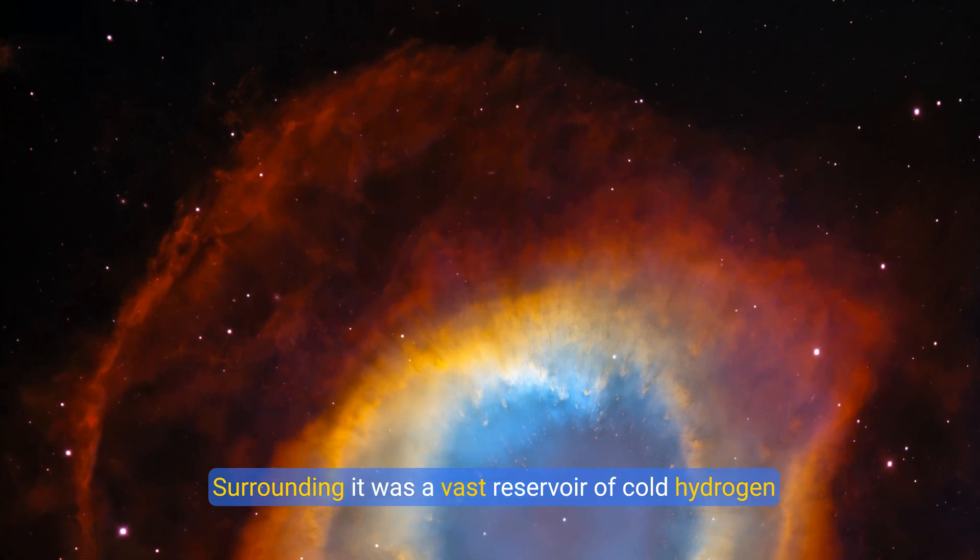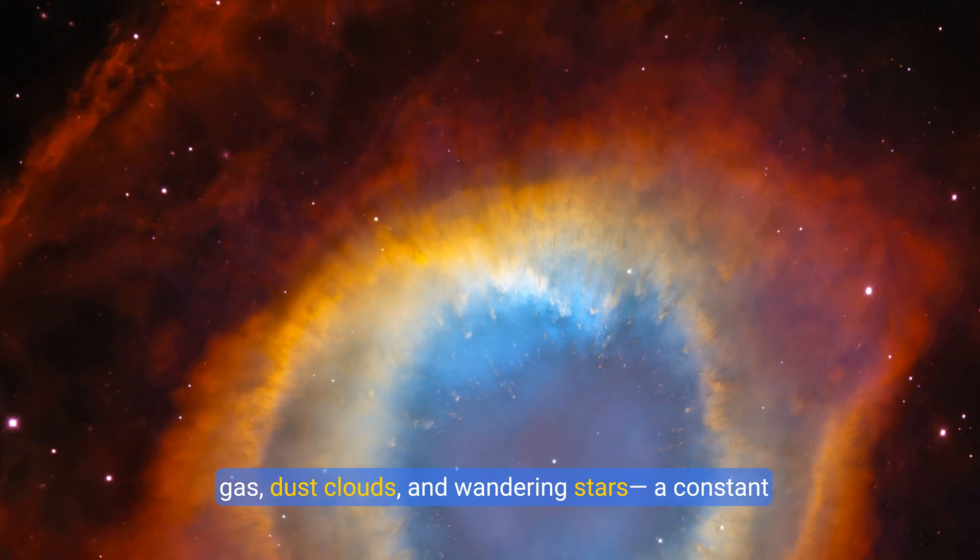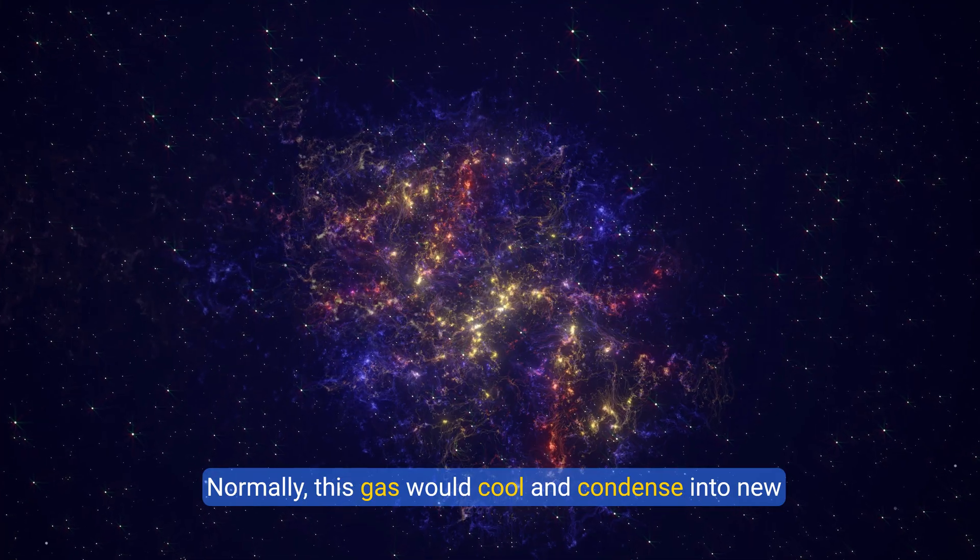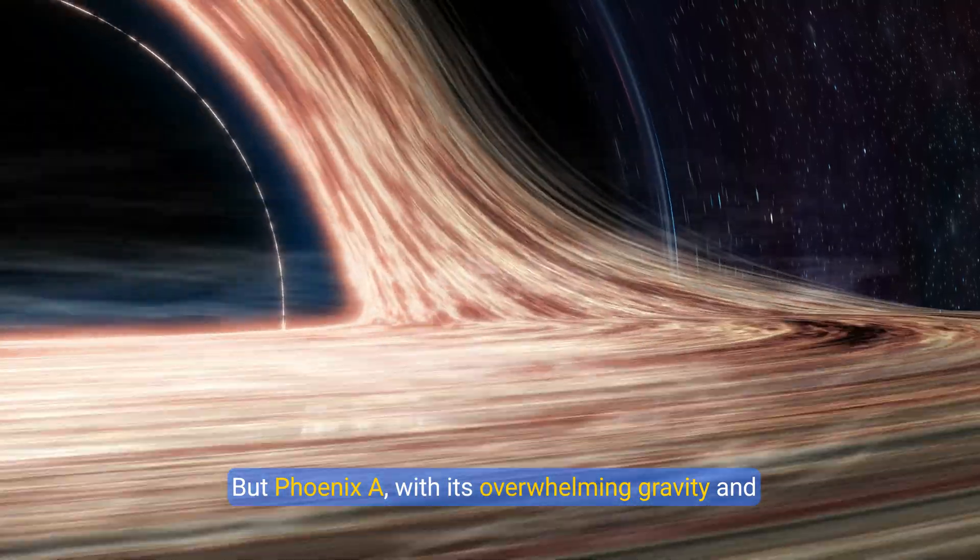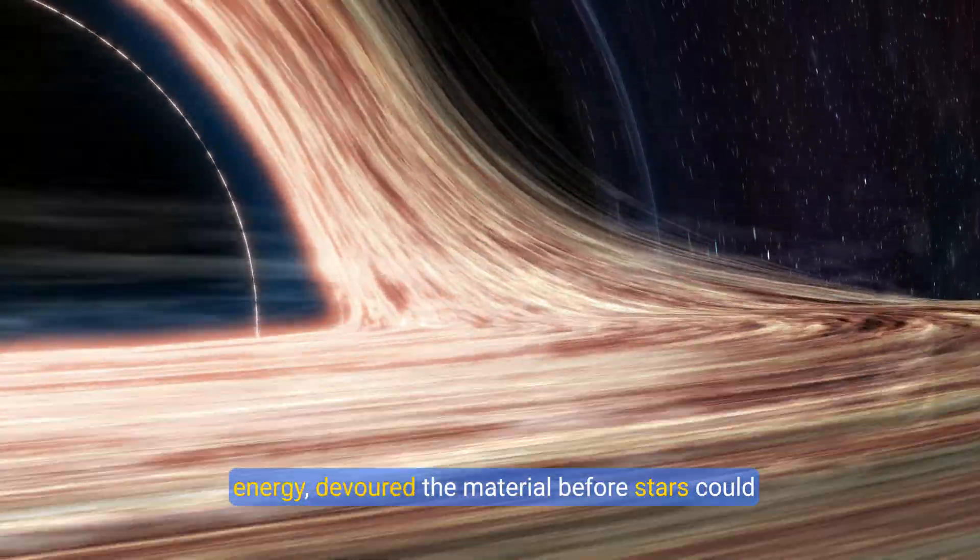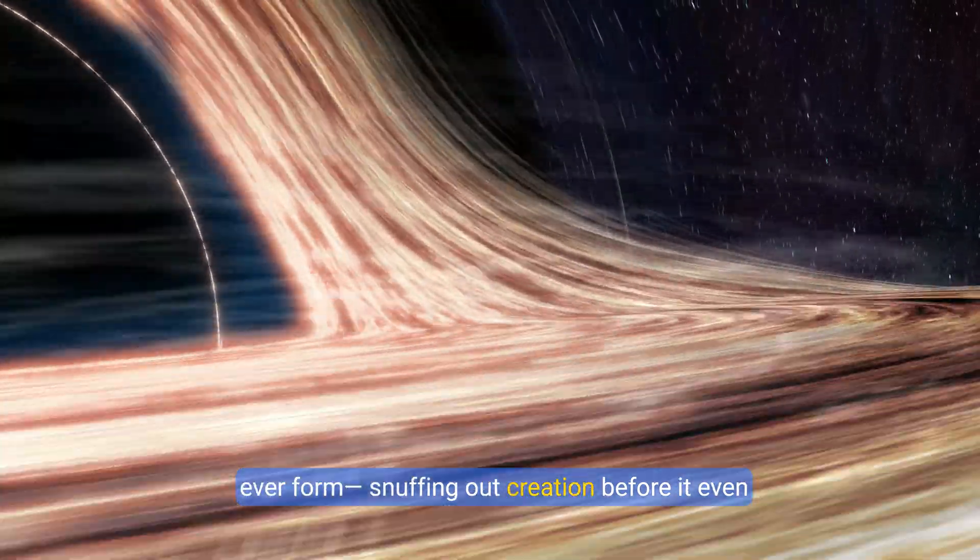Surrounding it was a vast reservoir of cold hydrogen gas, dust clouds, and wandering stars—a constant fuel supply. Normally, this gas would cool and condense into new stars. But Phoenix A, with its overwhelming gravity and energy, devoured the material before stars could ever form, snuffing out creation before it even began.